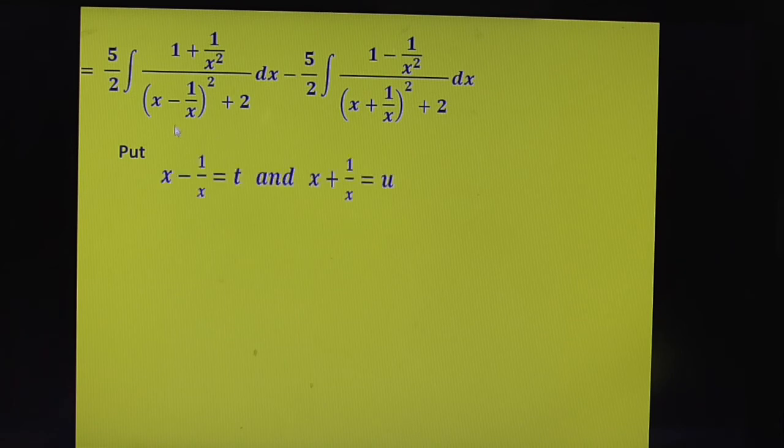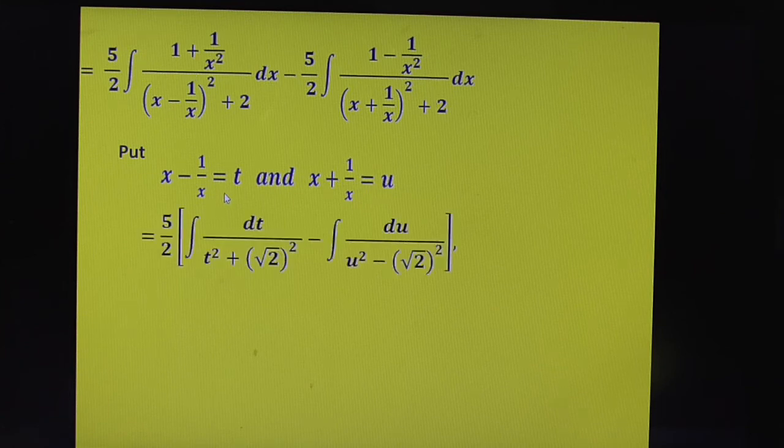I am taking x minus 1 by x as t and x plus 1 by x as u. Differentiate both sides. 1 plus 1 by x square dx equals dt. If you differentiate this, you get 1 minus 1 by x square dx equal to du. Observe the next step.